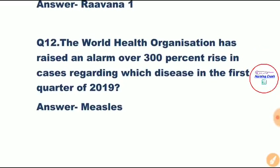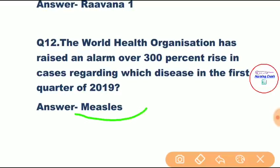Question number twelve: The World Health Organization has raised an alarm over a 300 percent rise in cases of which disease in the first quarter of 2019? Correct answer is Measles. The WHO raised an alarm over a 300 percent increase in measles cases globally in the first quarter of 2019 compared with last year. So far that year, 170 countries had reported 112,163 measles cases, compared to 163 countries reporting 28,124 cases at the same time in 2018.